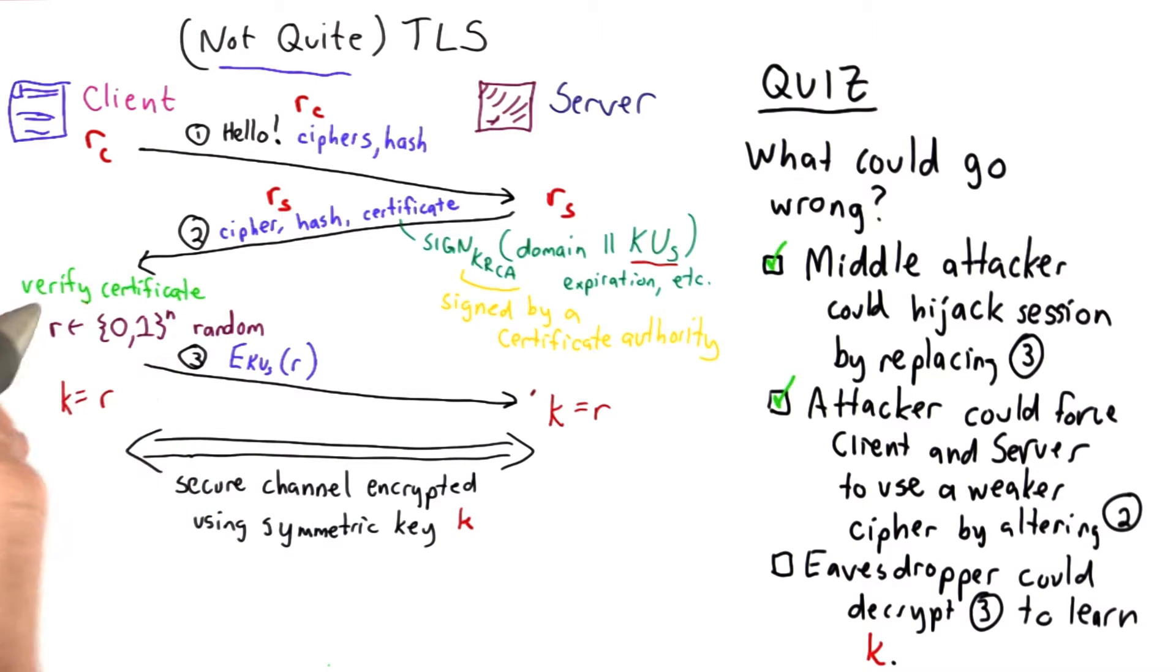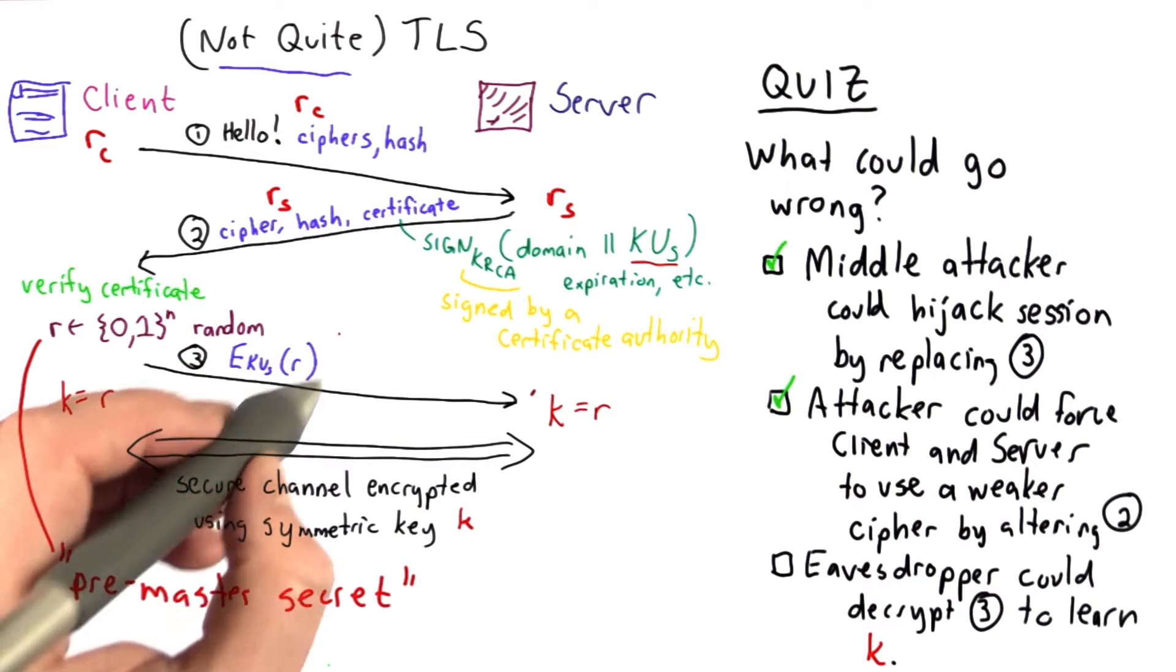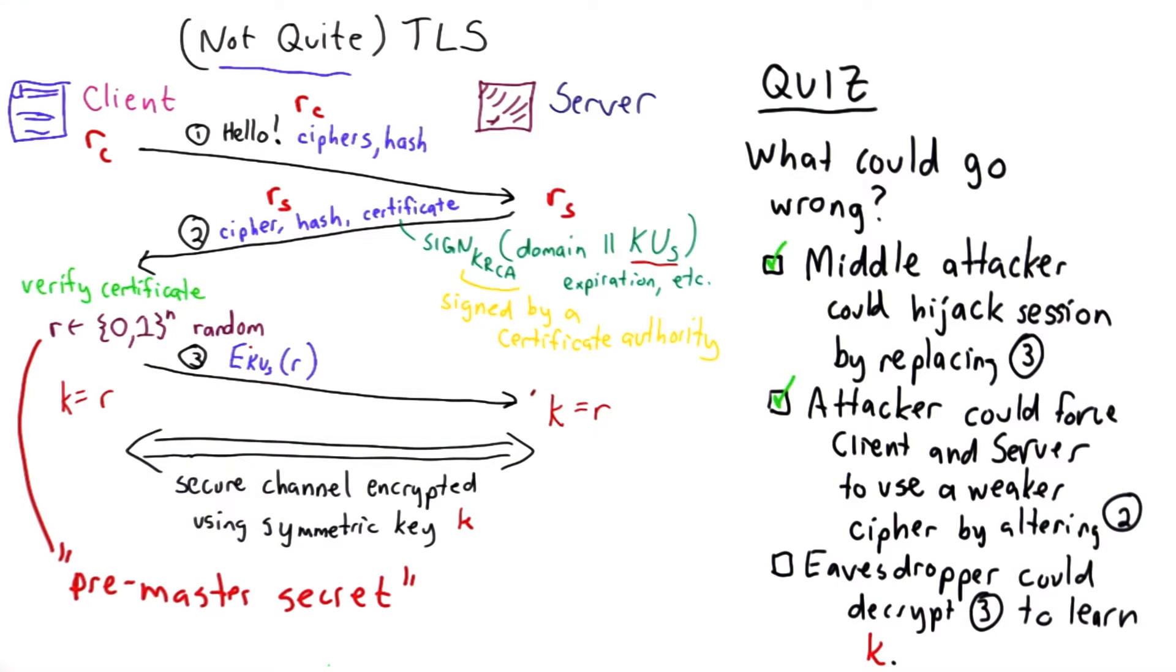This value will still be created. This is what's called the pre-master secret. What we're going to send here is going to include a little extra information. It's still going to include r, the pre-master secret. We need to share that with the server.